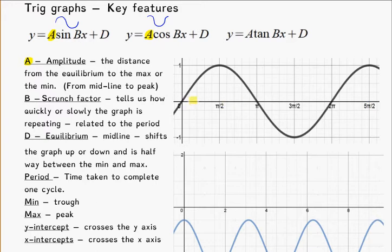So my amplitude here, in this graph, is going to be from my midline to the peak, or from my midline down. It's not the total distance across, but it is literally just from the midline up, or from the midline down.